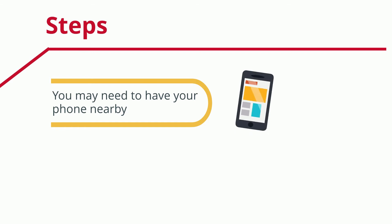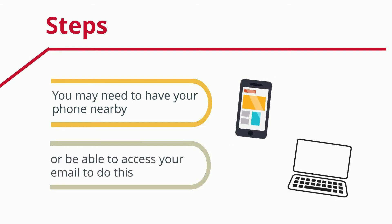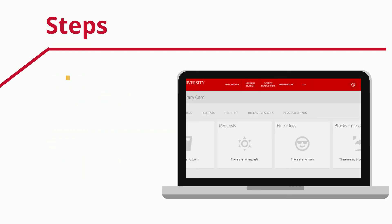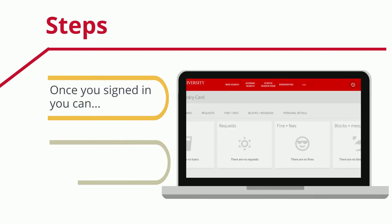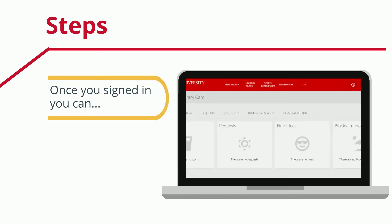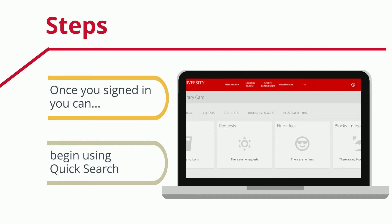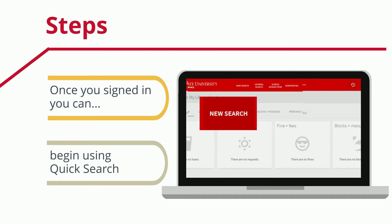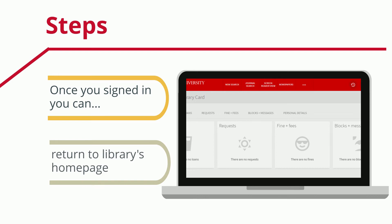If you need to, be sure to have your phone or email handy to make that process easier. From this point, you can review your library account information. Begin searching Quick Search by clicking on the New Search button at the top, or return to the library's homepage.